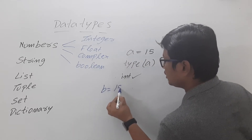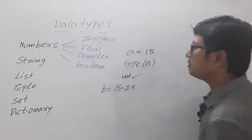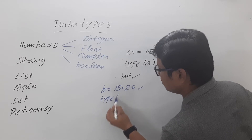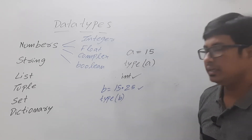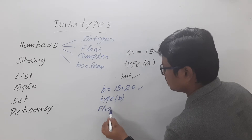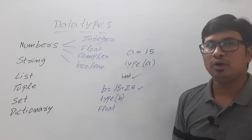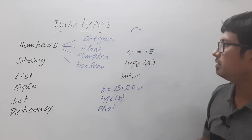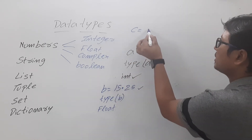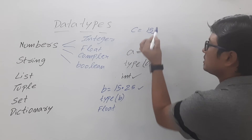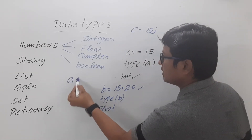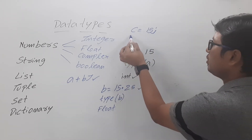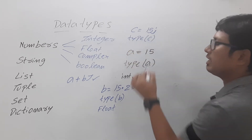If you want to assign a real number, suppose b = 15.25, then b is a float data type. If you want to know the data type of variable b, you can write type(b) and it will print the output as 'float'. Similarly, if you want to assign a complex number you can write c = 15j, because complex numbers are in the form a + bj. If you write type(c) it will display 'complex'.